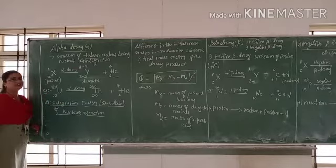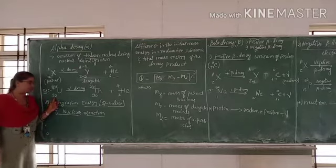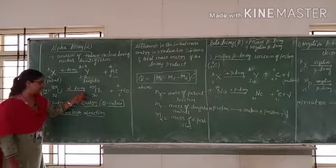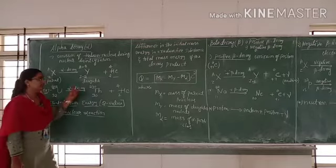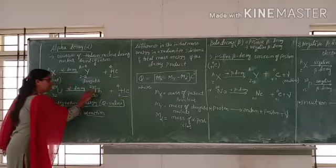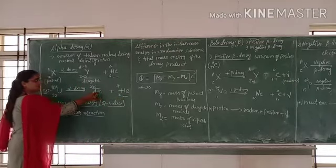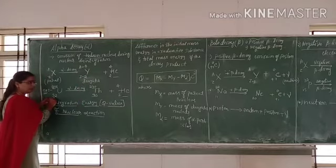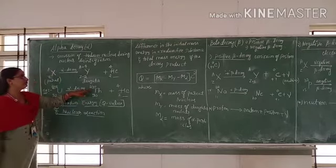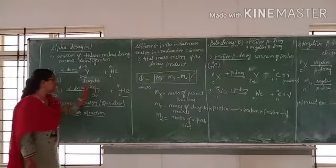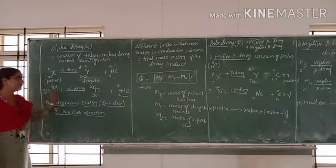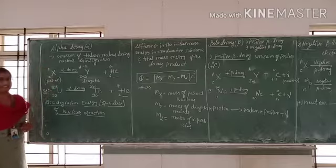For example, we are considering uranium. Uranium has atomic number 92 and mass number 238. When this uranium nucleus undergoes alpha decay, helium nucleus is emitted and the daughter nucleus is thorium. The atomic number decreases by 2: 92 minus 2 equals 90. The mass number decreases by 4: 238 minus 4 equals 234. So 234 plus 4 equals 238, and the equation is satisfied. This is an example of alpha decay.